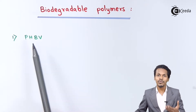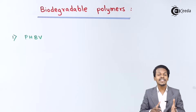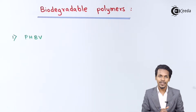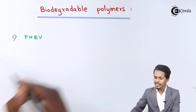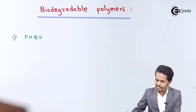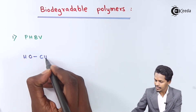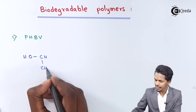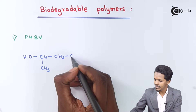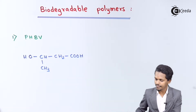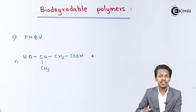PHBV stands for polyhydroxybutyrate-co-hydroxyvalerate. To prepare PHBV, the first starting material we consider is 3-hydroxybutyanoic acid. Its structure consists of an OH group, a CH3 group, and a CH2-COOH group.